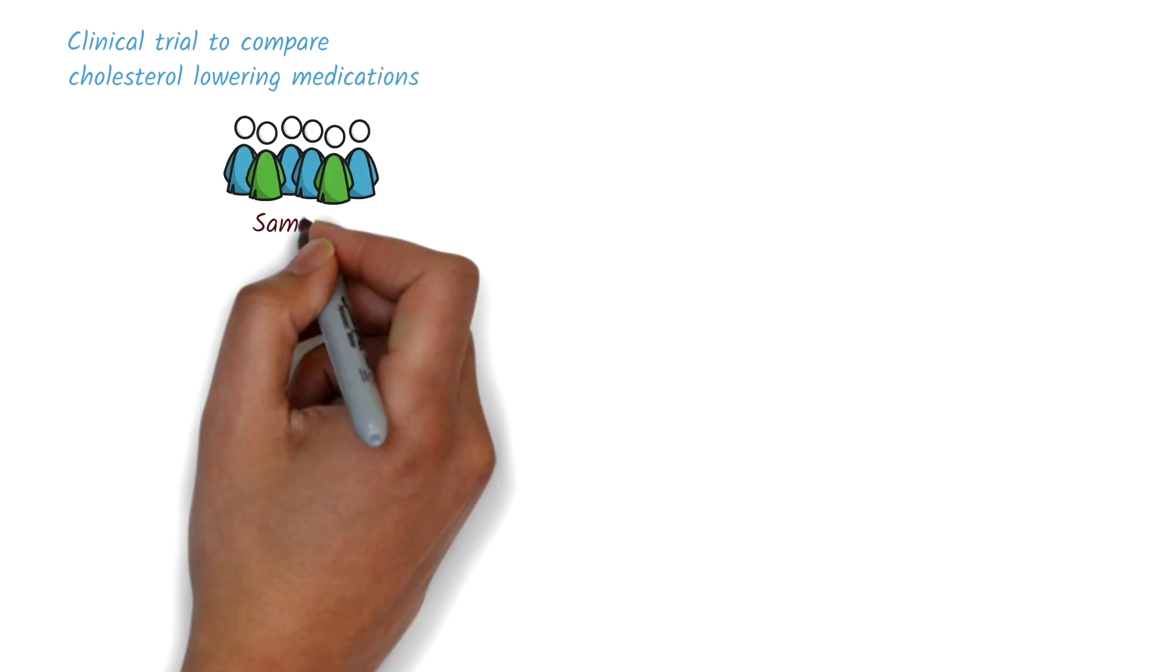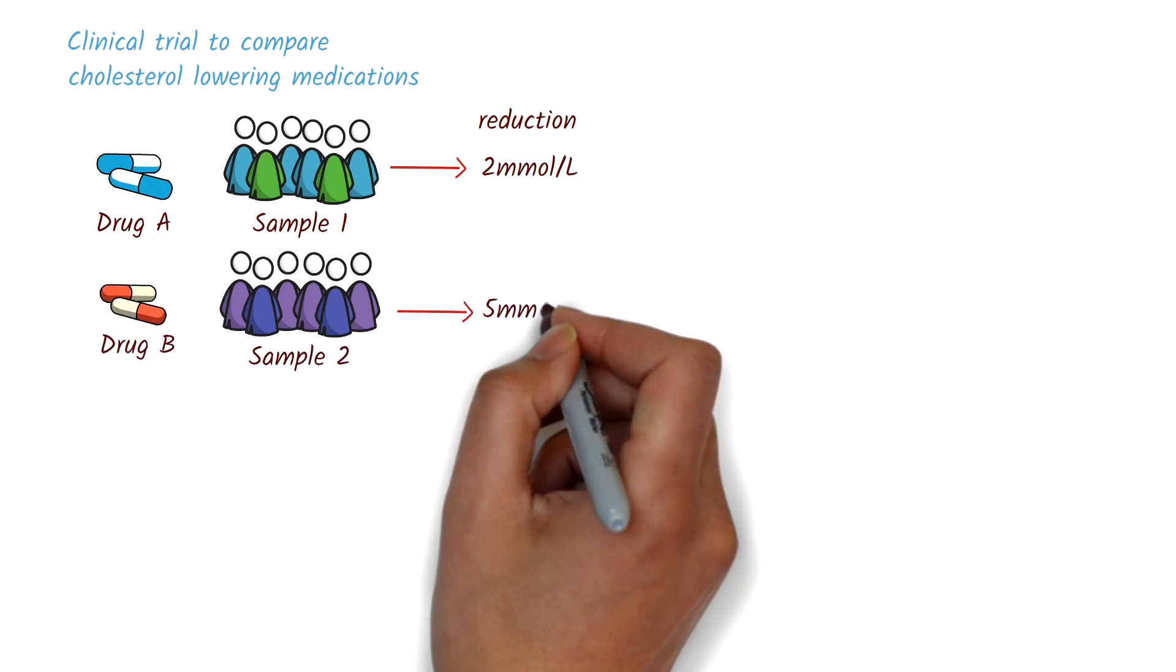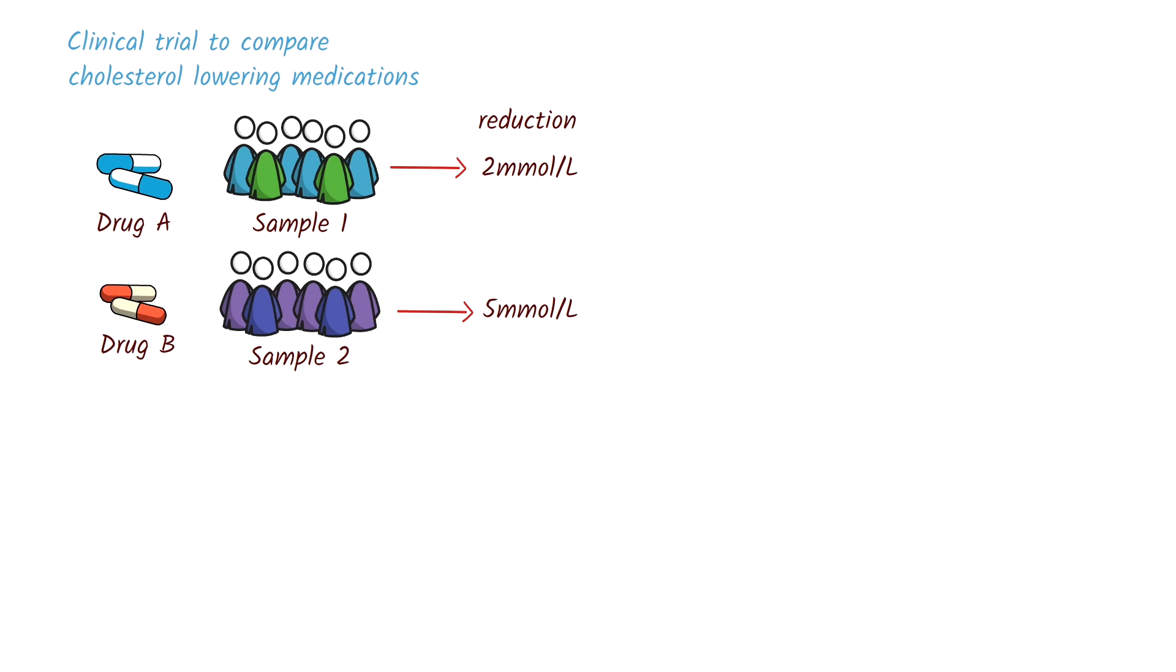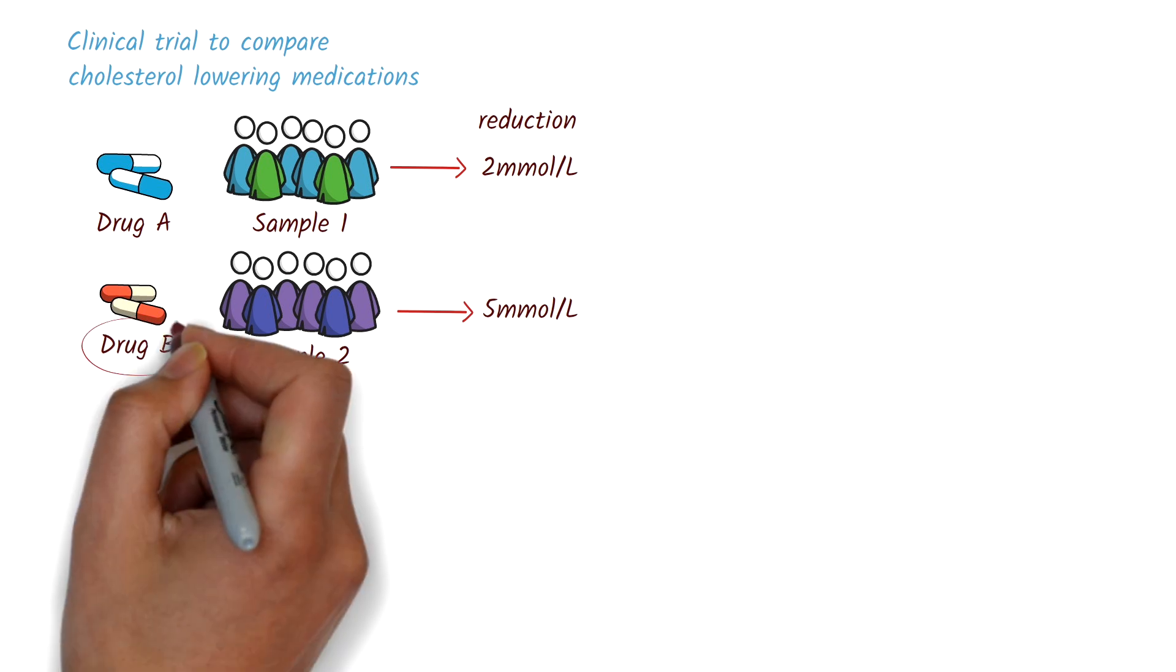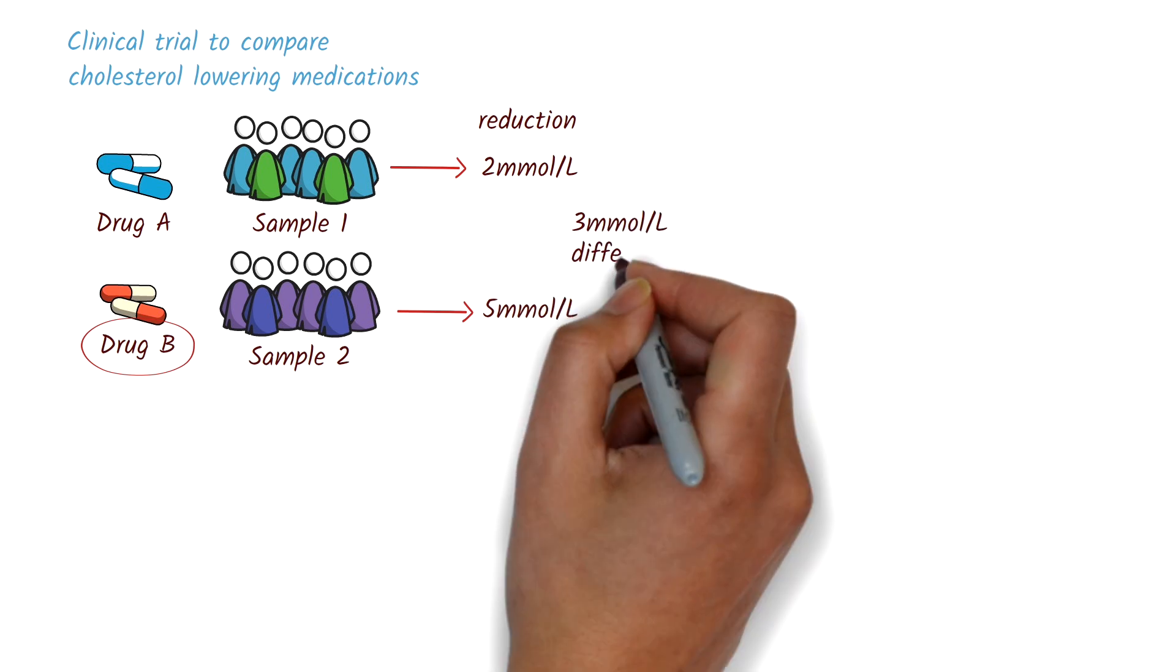Let's say we conducted a clinical trial to compare two cholesterol-lowering medications. One group, sample 1, received drug A, which lowered cholesterol by an average of 2 millimoles per liter. The other group, sample 2, received drug B, which lowered cholesterol by an average of 5 millimoles per liter. Now, at first glance, drug B seems more effective than drug A, with a difference of 3 millimoles per liter.